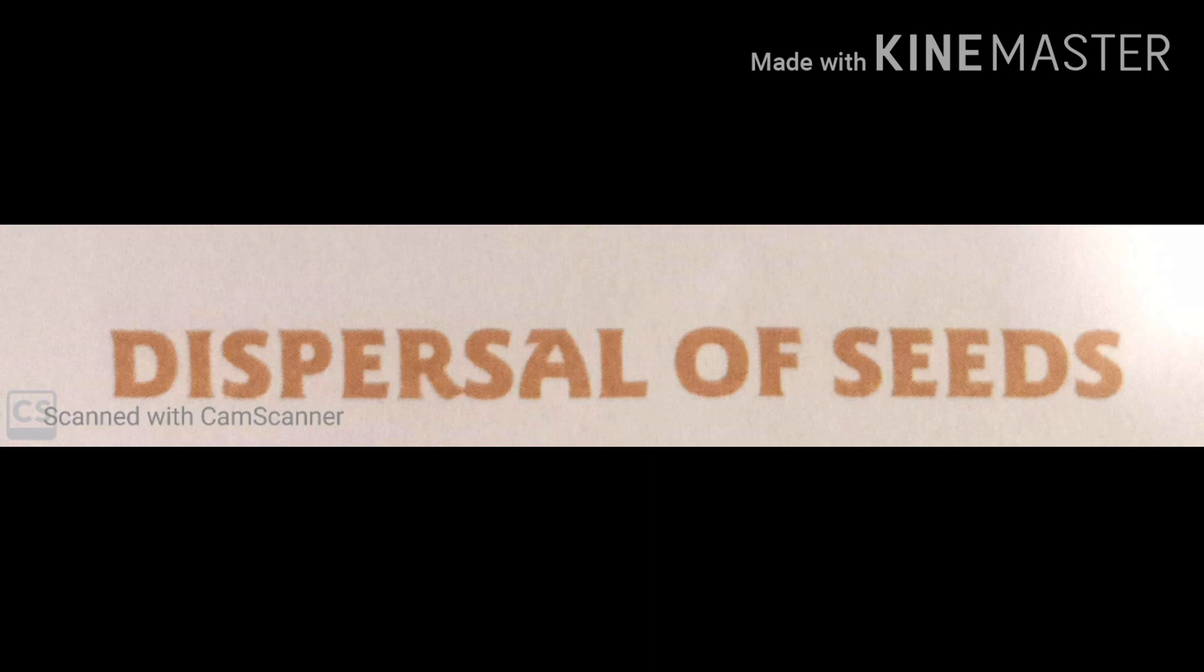They have to compete for light, water and nutrients from the soil, hence not all seeds will be able to grow into plants. Dispersal of seeds is very important for the survival of plant species. The process by which seeds are scattered away from the mother plant is called dispersal. There are many ways by which seeds get dispersed.